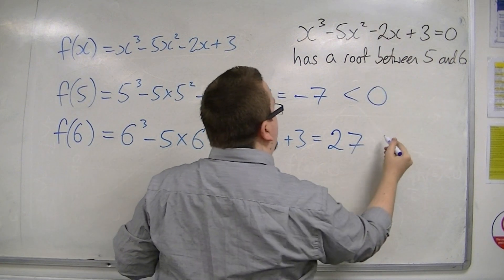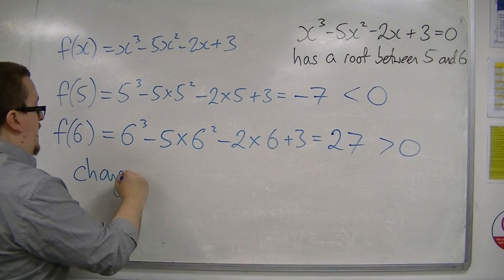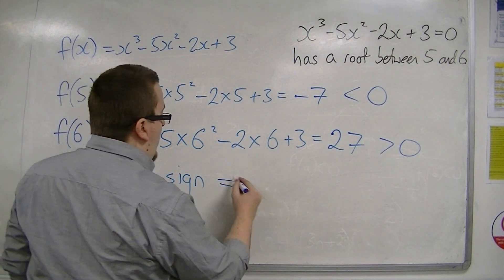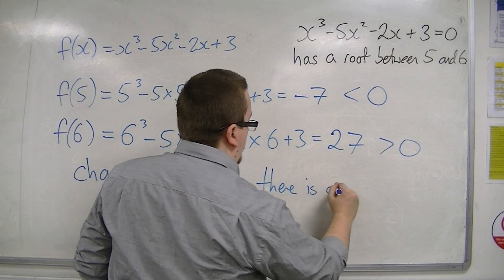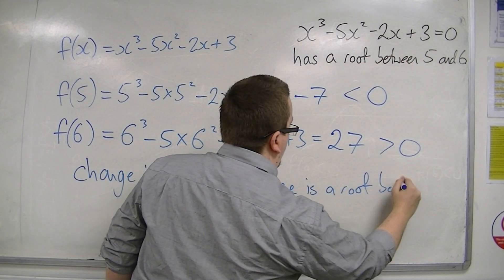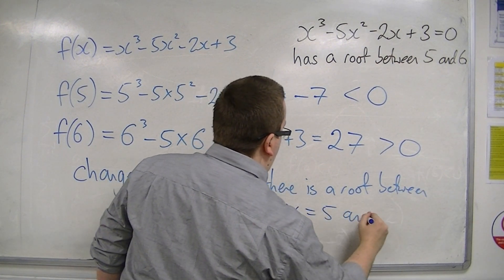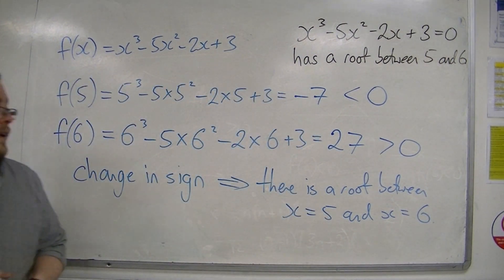So because one was negative and one was positive, because we have a change in sign, that implies that there is a root between x = 5 and x = 6. That is what we can say.